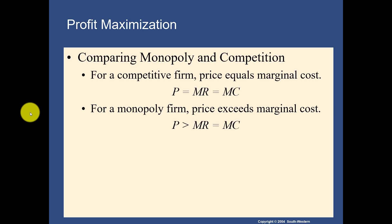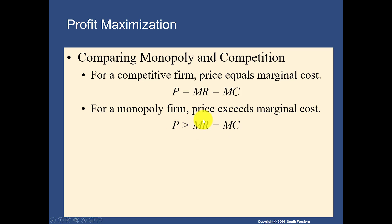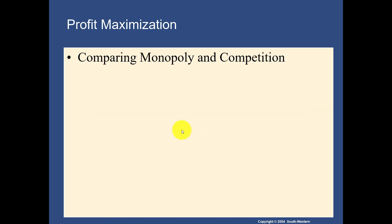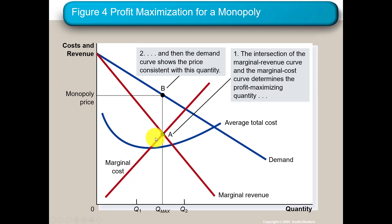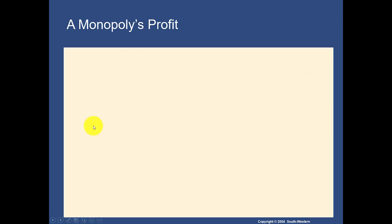For the competitive firm, price equals marginal revenue equals marginal cost — they are all the same. But for the monopoly, price is greater than where MR equals MC. The price sits above the intersection of marginal revenue and marginal cost. In the diagram, price is up here and it's greater than the MR = MC intersection — that is how the monopoly maximizes its profit.